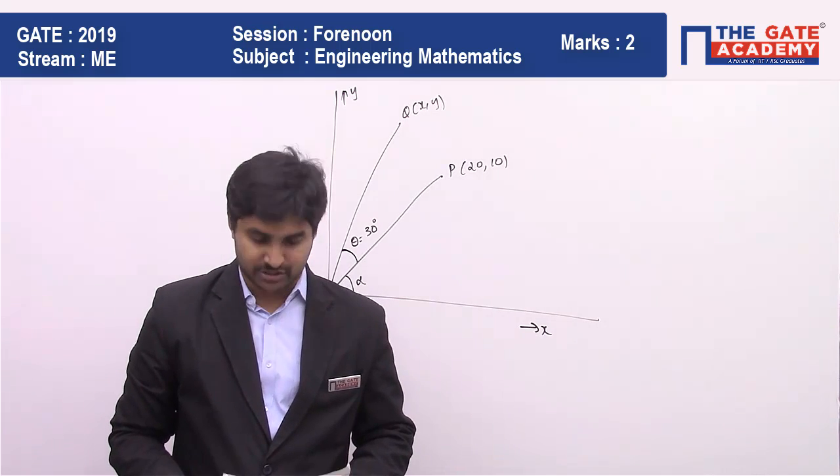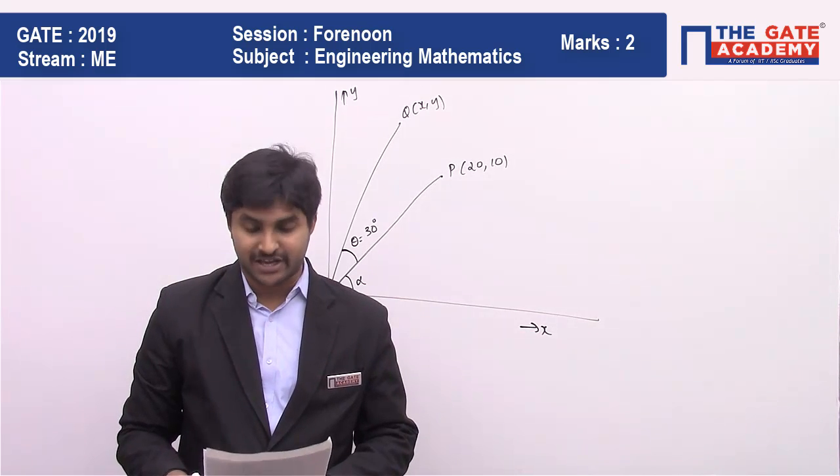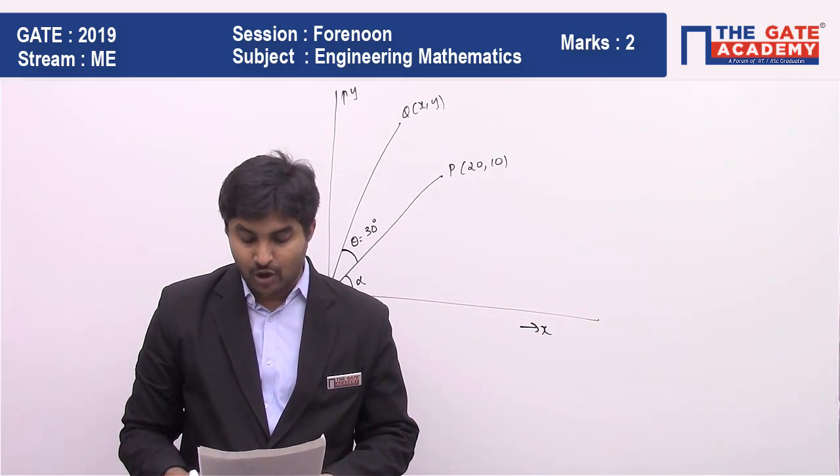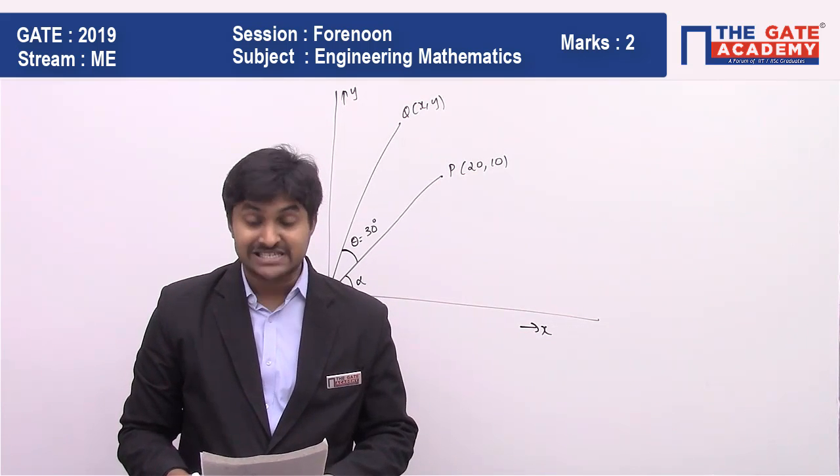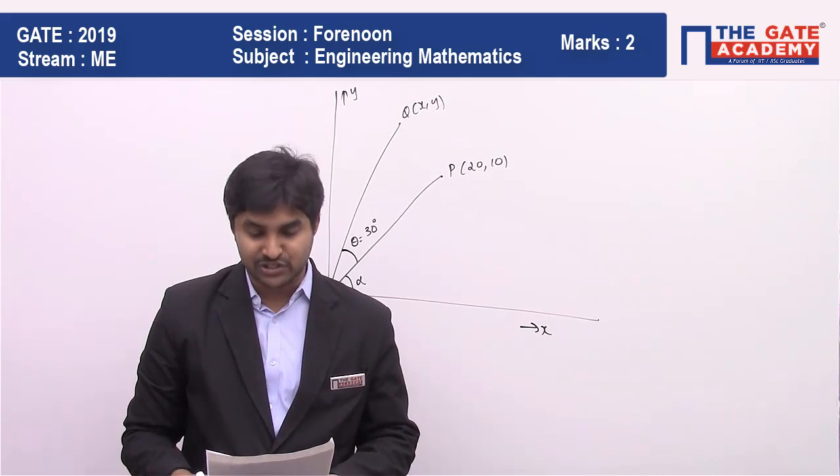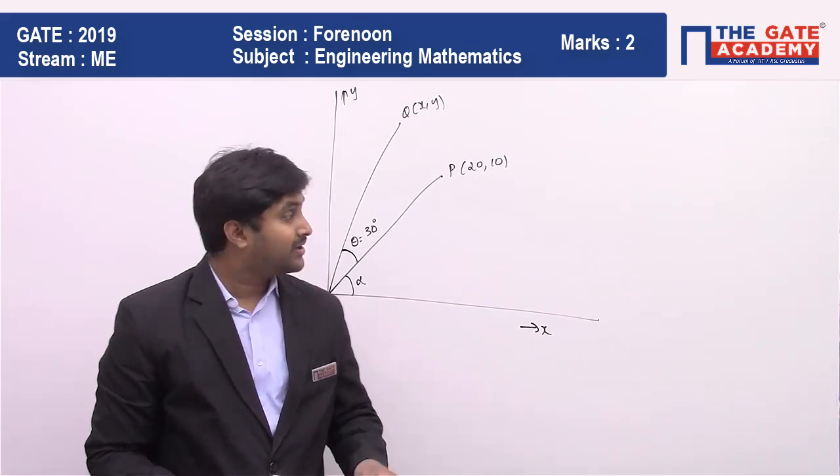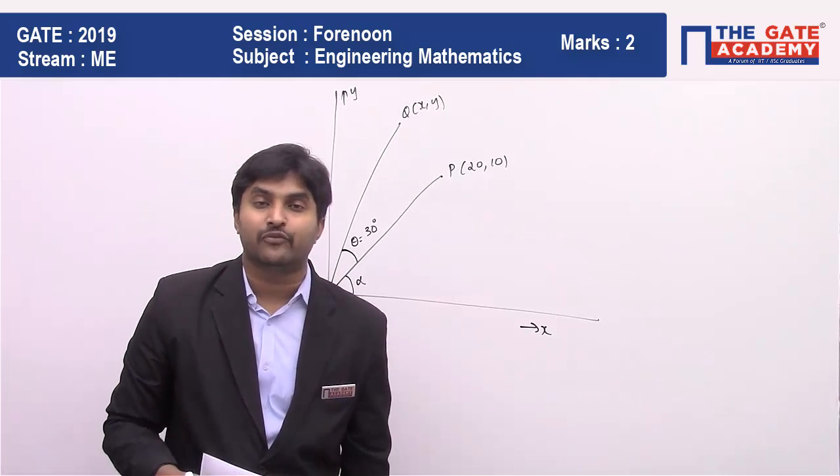First of all, let us read the question. A position vector OD bar of the point P (20, 10) is rotated anti-clockwise in XY plane by an angle of 30 degrees such that the point P occupies the position Q as shown in the figure. So you can see the figure and the angle is going to be 30 degrees. The coordinates of Q are?